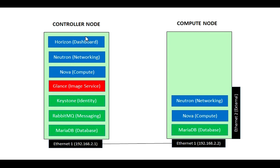We have a 2-node setup: the first one is the controller node and the second one is the compute node. On the controller node, we will be installing MariaDB for the database, RabbitMQ for message service, and Keystone identity service — these three we have already done. In this session I will be showing Glance image service. In the next session I will show you Nova for compute, Neutron for networking, and Horizon for the dashboard. On the compute node we have MariaDB and will be pairing with Nova and Neutron. We have already seen how to install and configure MariaDB, RabbitMQ, and Keystone.